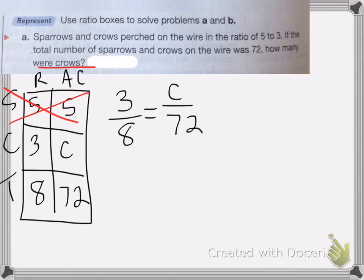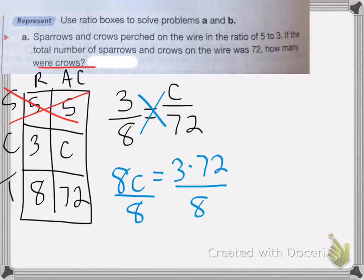So again, we cross multiply to solve. So I get 8c equals 3 times 72. Divide both sides by 8. 8's cancel out.